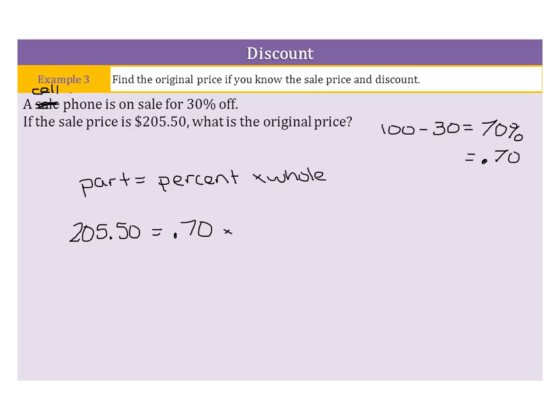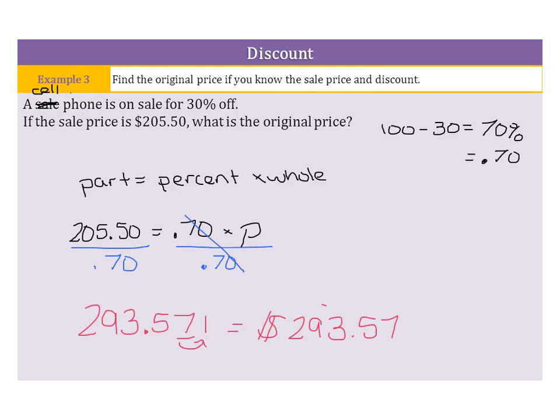And we can multiply that by our whole, which is P, because that's going to be my original price. Now, to solve this equation, divide by 0.70 on both sides, and your result is 293.571, and it keeps going. Well, if you need to round here, we're going to round to the nearest penny. The one's not going to round the 7 up, so this is simply $293.57.